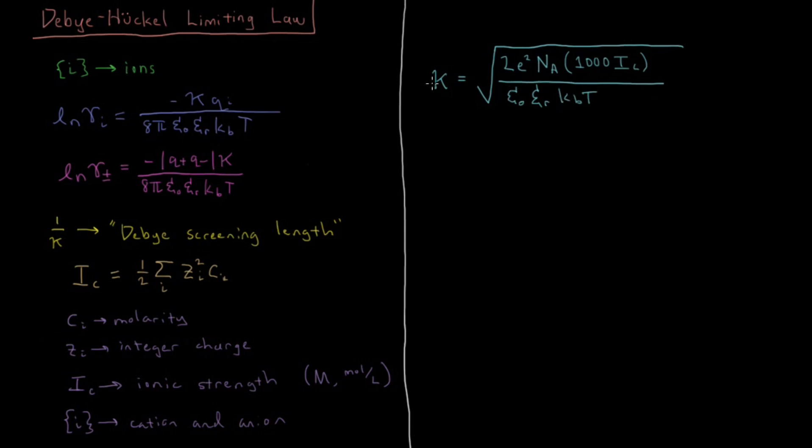As I see here, kappa is going to depend on the ions because it depends on what the ionic strength of the ions are, what their concentration is, and what their charges are. It depends on the solvent because it depends on the dielectric constant of the solvent. Epsilon r is the dielectric constant of the solvent.